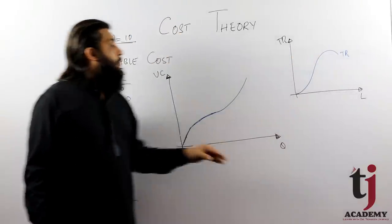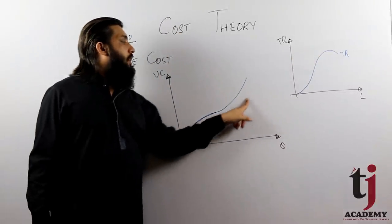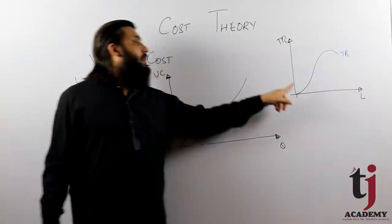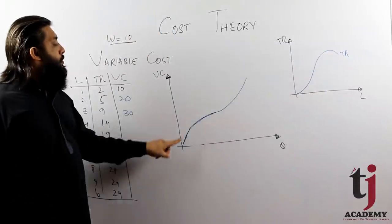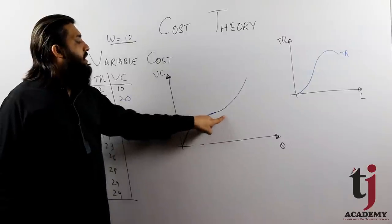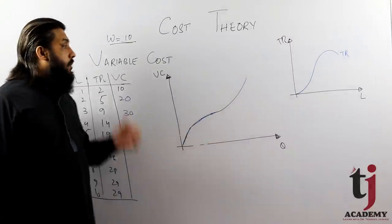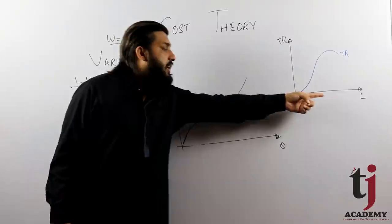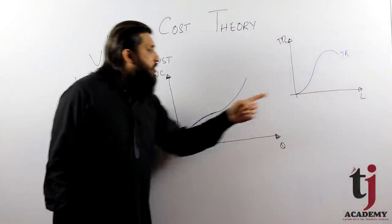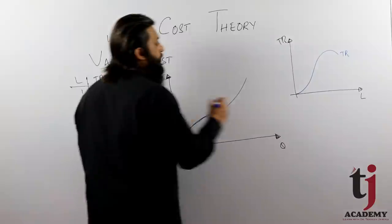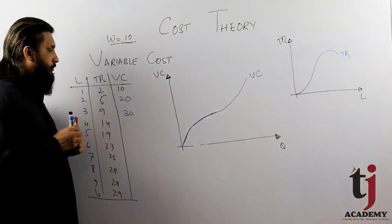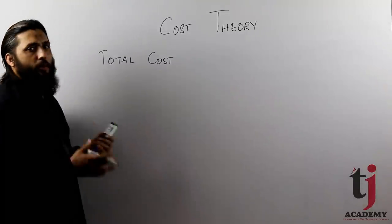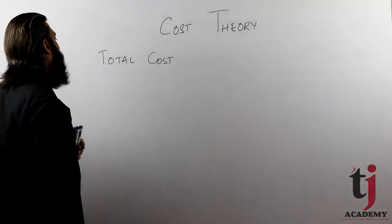Productivity is increasing with increasing rate, then increasing with decreasing rate, then increasing with increasing rate. Because productivity - when constant, cost is constant. When productivity decreases, cost increases. We named this variable cost.